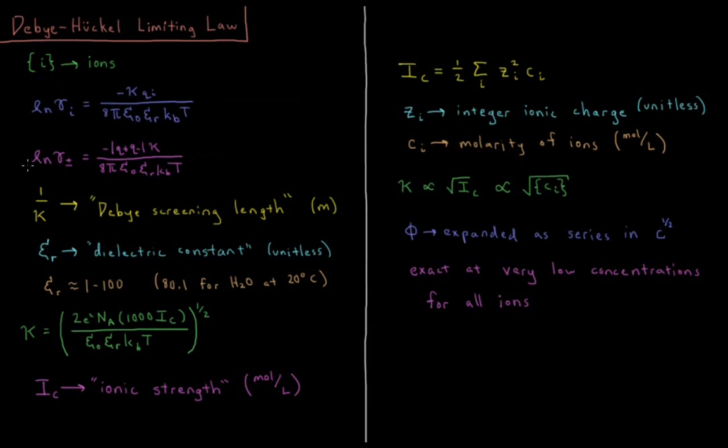This also gives us an expression for the mean ionic activity coefficient. The natural log of γ± is equal to negative the absolute value of the charge of the cation times the charge of the anion times κ over 8π ε₀ εᵣ times Boltzmann constant times temperature.